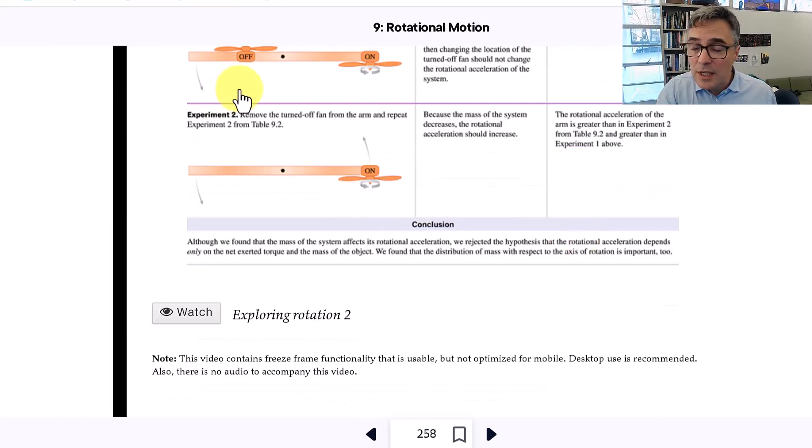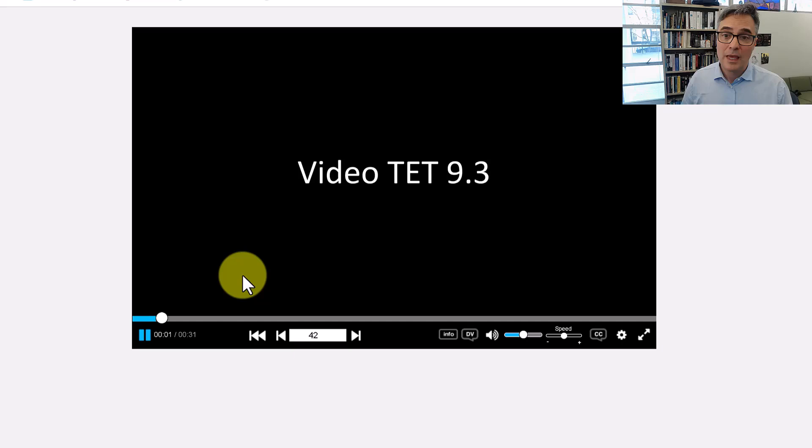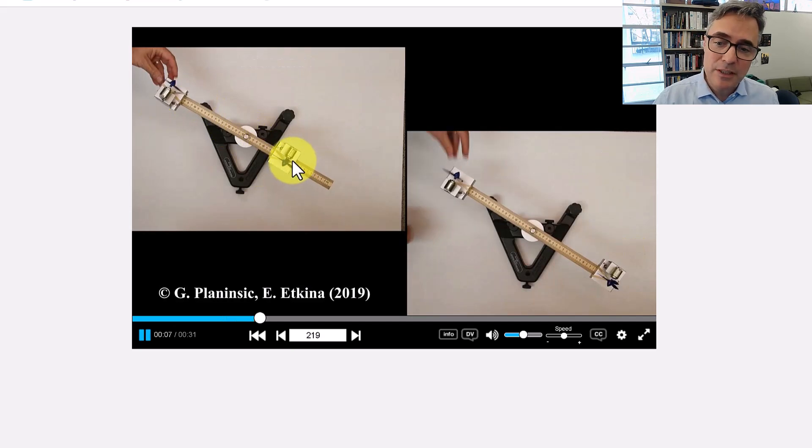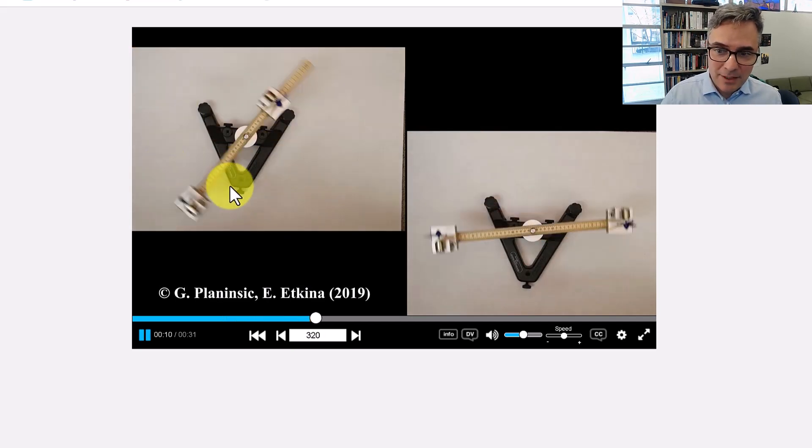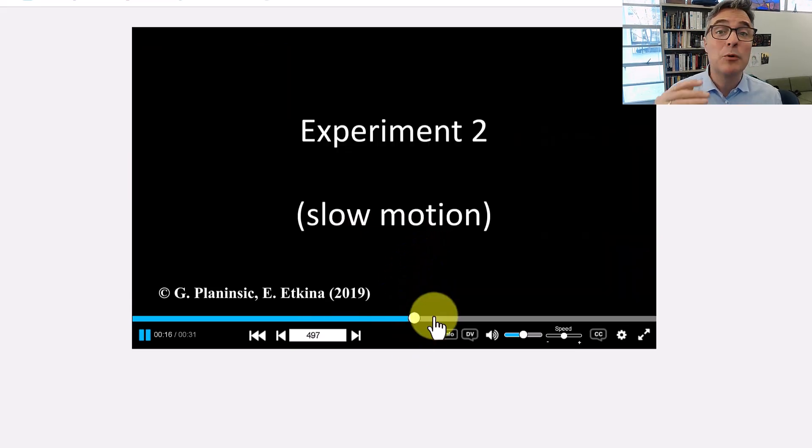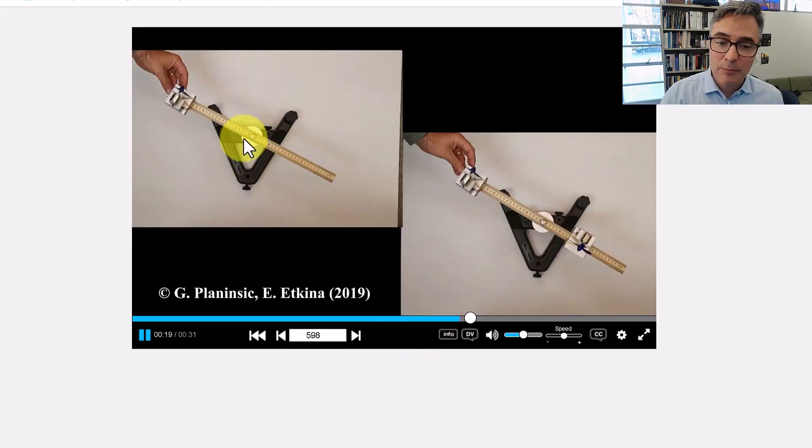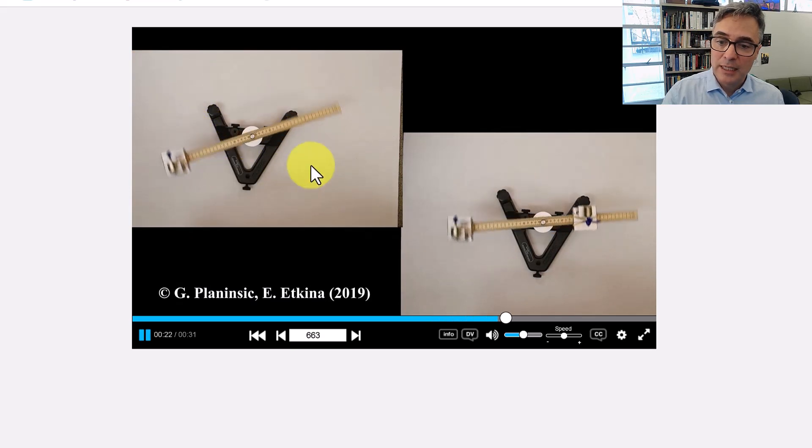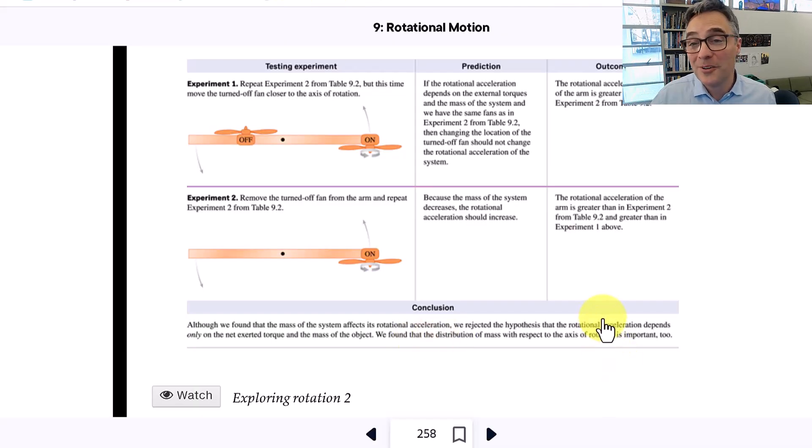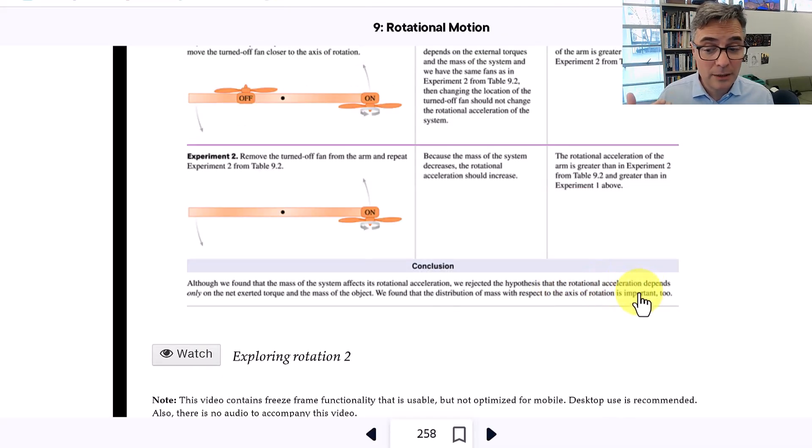And then the second video actually tests taking those fans and changing their distance from the rotation axis. The point of this experiment is that in experiment one, they turn on one of the fans and leave the other fan sitting there off. And it accelerates at some certain rate. But then they try it again, same fan accelerating it, but they remove the other fan to make it lighter. And what you find is that once this fan is on, it accelerates much more when there's less mass on the ruler.